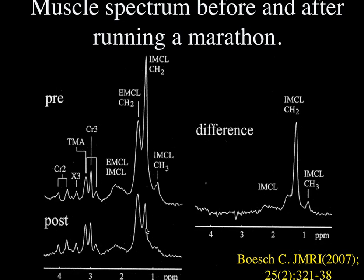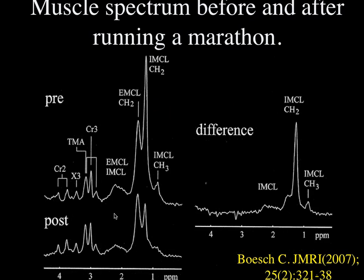Spectroscopy is actually conceptually simple. The problem is that the human body has such a complicated mixture of biochemicals inside each voxel that the spectrum becomes very complex and difficult to evaluate. In a biochemical lab environment you're dealing more with pure chemicals, so complexity of peaks is manageable, but it's far worse in the living human body. Any questions about spectroscopy?